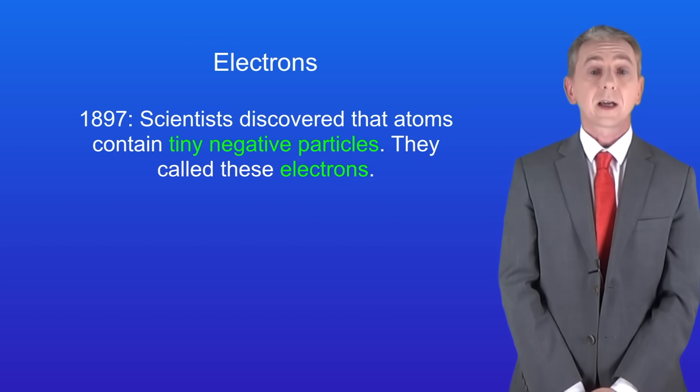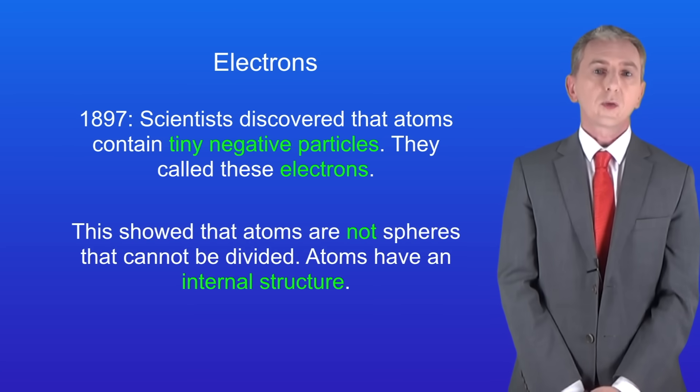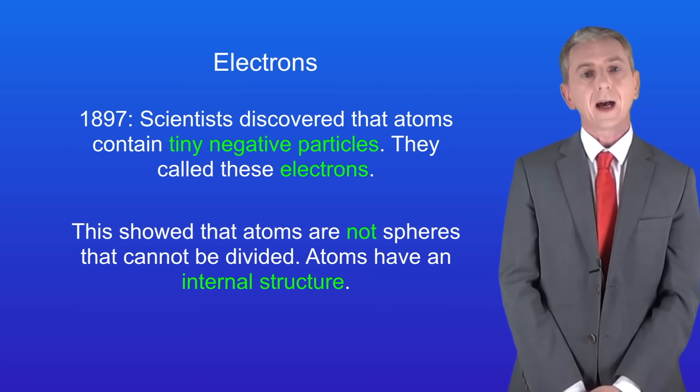However, in 1897 scientists discovered that atoms contain tiny negative particles called electrons. This was a really big discovery because it showed that atoms are not tiny spheres that cannot be divided. Atoms must have an internal structure.